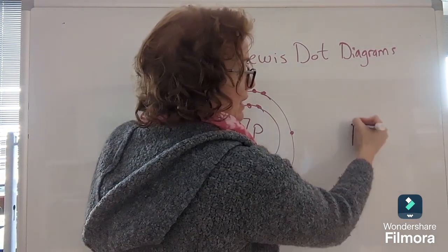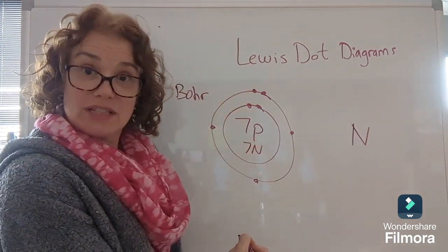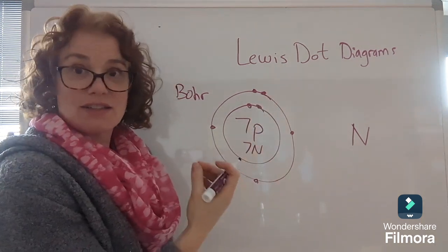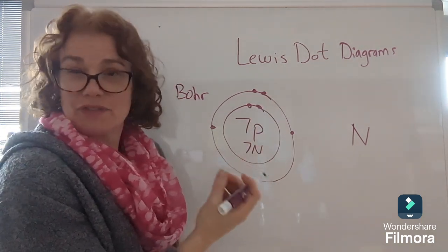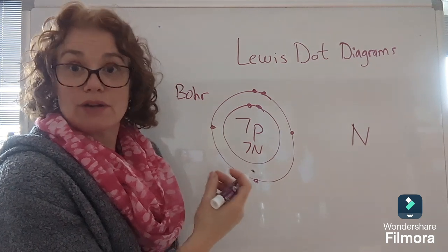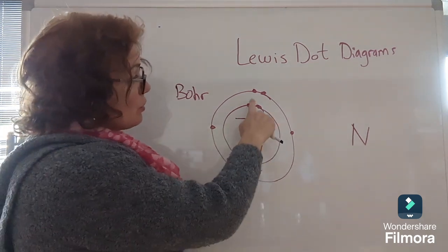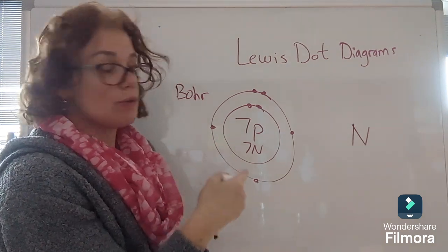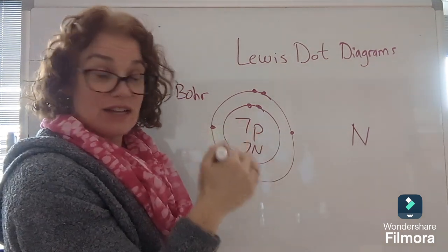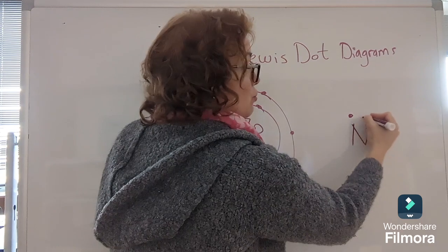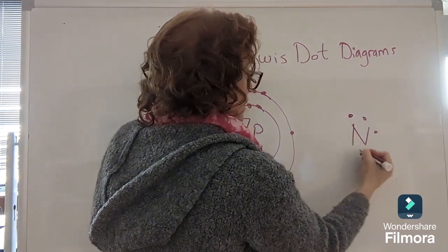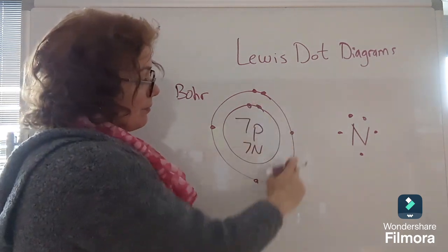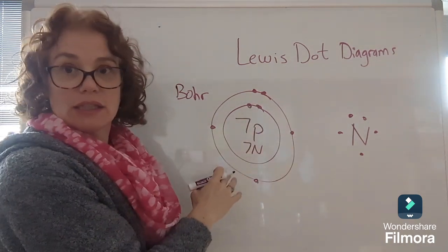All we do is we write the element symbol in the center of the diagram, and we draw in the valence electrons. Valence electrons is a fancy word that means the outer energy level electrons. So nitrogen has five electrons in its outermost ring. That means it has five valence electrons. So we draw them in the same way as we would the spacing of the electrons in the Bohr model.